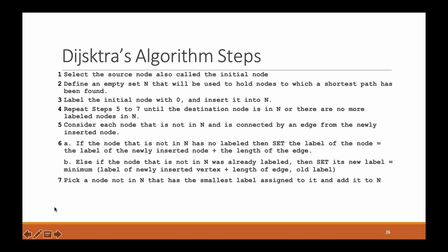If the node not in N was already labeled, we set its new label to the minimum of the label of the newly inserted vertex plus the length of the edge, and the old label. So we try to find the minimum: if the node is already labeled, we figure out if there's any other path to that node which produces a smaller cost. We compare the new path cost against the old label to see which is smaller, and whichever is smaller we put in our table. Then we pick the node not in N that has the smallest label and add it to N.